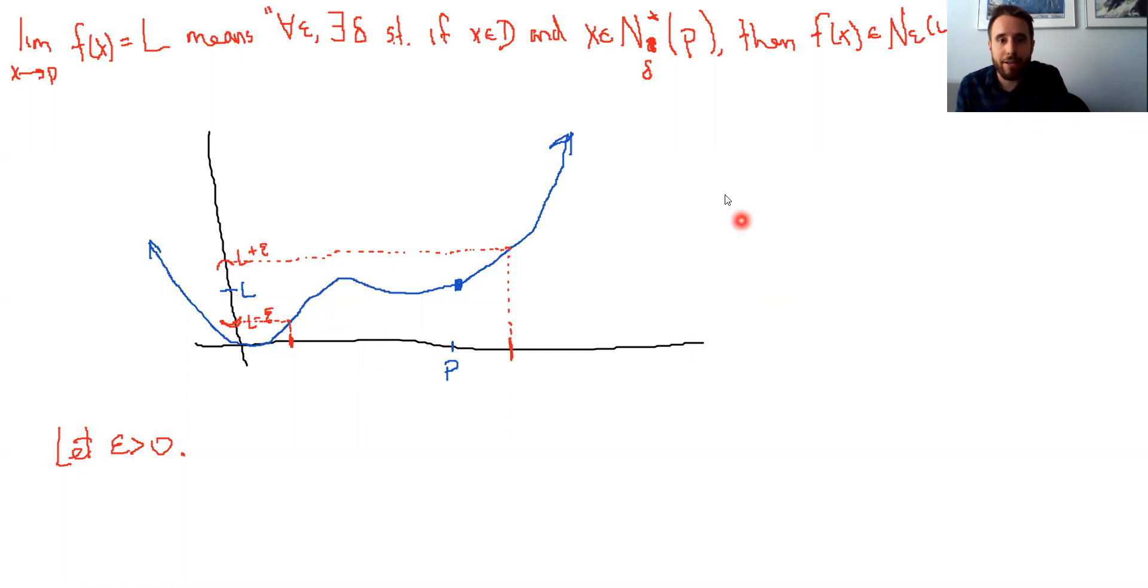And so what I can do then is I can choose a delta value and create a delta neighborhood. And I'm going to let my delta color be purple because why not. So if I say maybe this distance right here is my delta distance. And so my deleted delta neighborhood becomes this range. So it's jumping over the point P, but it goes from P minus delta up to P plus delta.